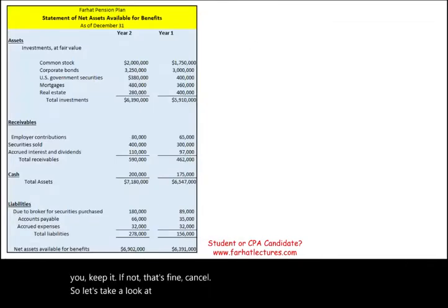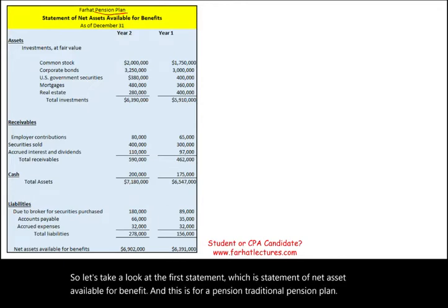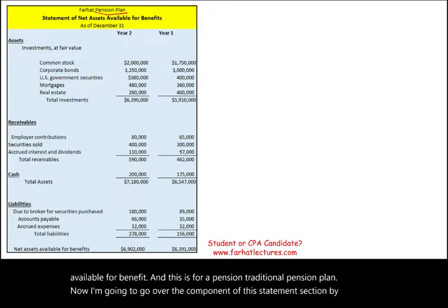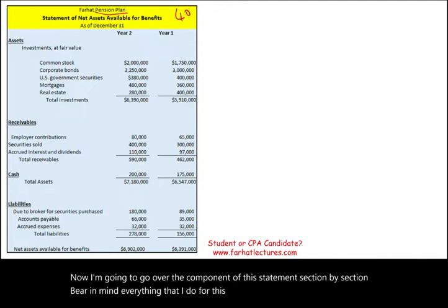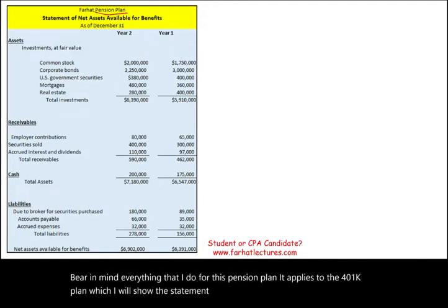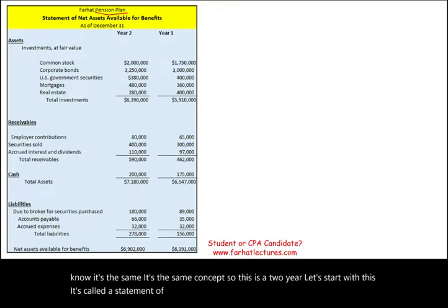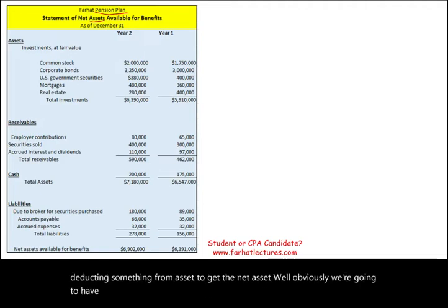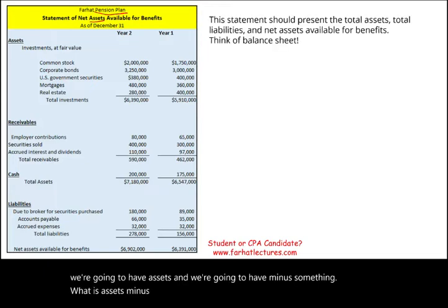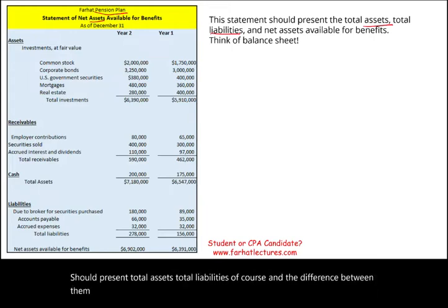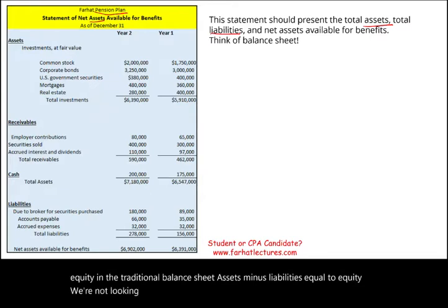Let's look at the Statement of Net Assets Available for Benefit — starting with the traditional pension plan. The statement presents total assets, total liabilities, and the difference — assets minus liabilities — gives us the net assets available for benefits. We don't have equity like a traditional balance sheet; instead we have net benefit. Think of it as a balance sheet. Under assets, we'll see all sorts of investments: stocks, bonds, corporate bonds, U.S. government bonds, mortgages, real estate, gold, cryptocurrency — any investments. These investments are reported at fair value: if they went up in value, you write them up; if they went down, you write them down.